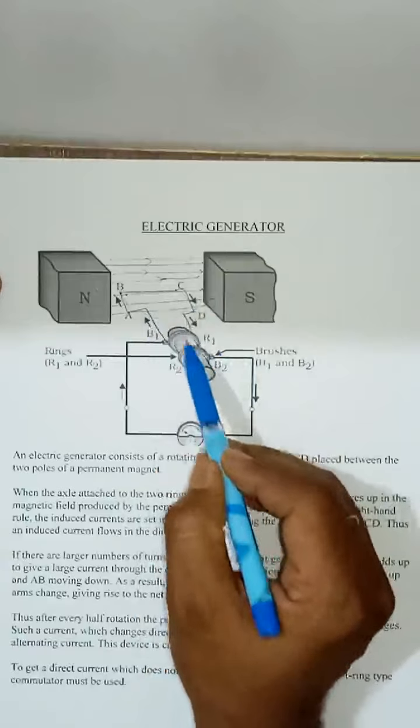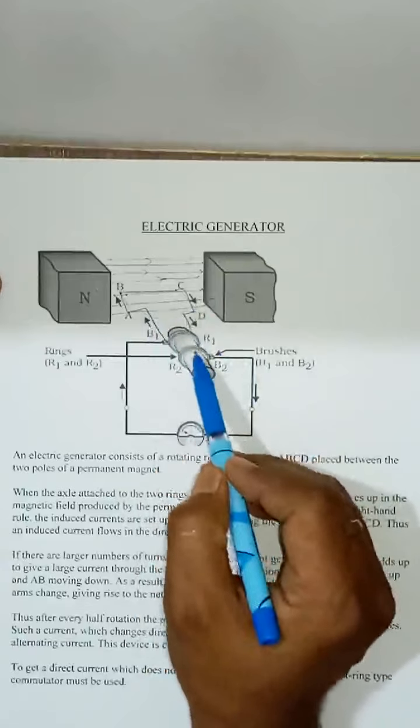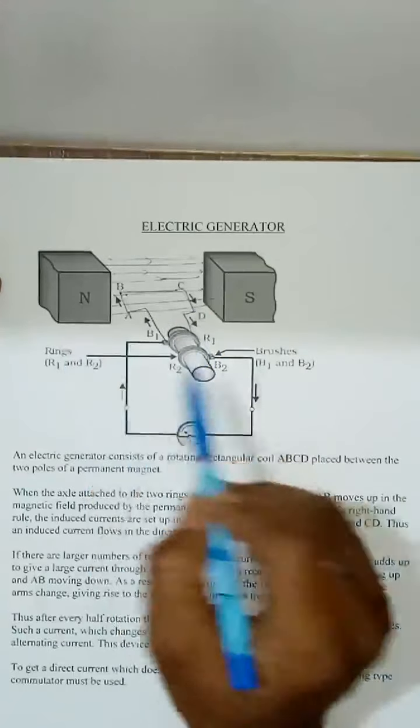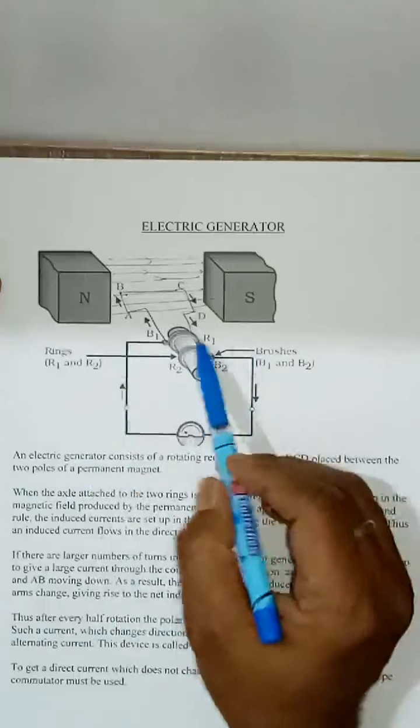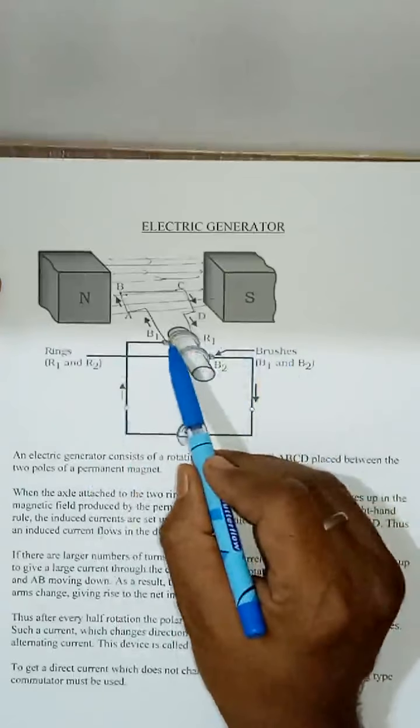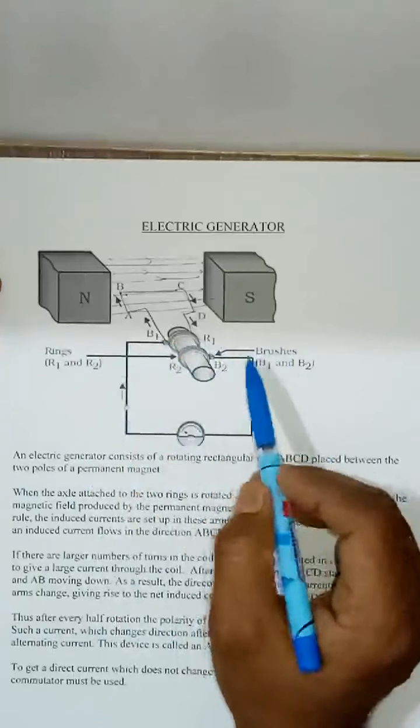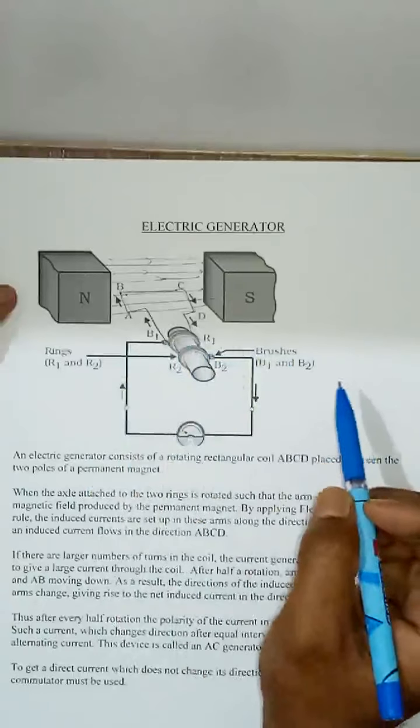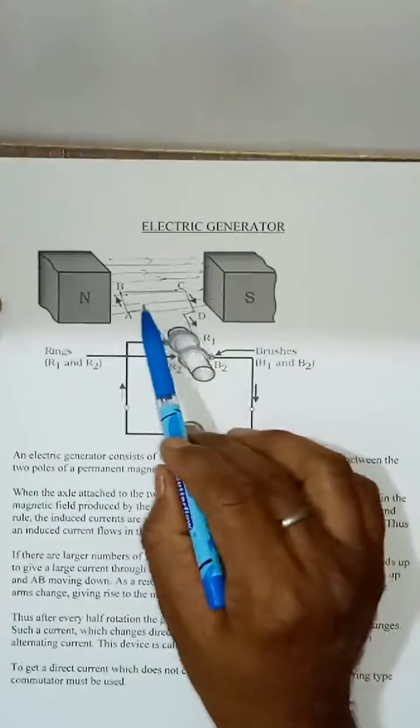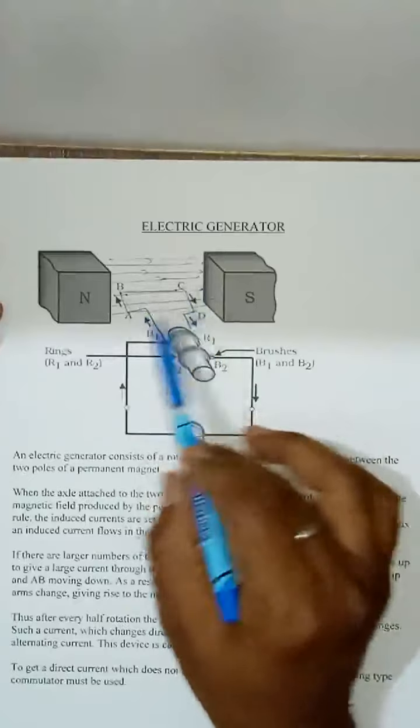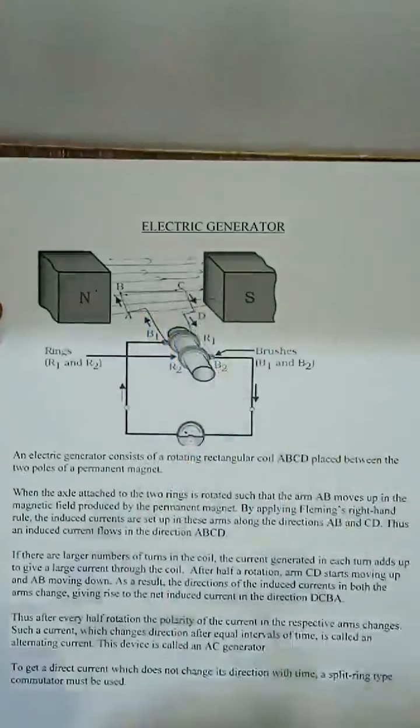Ring 1 and ring 2, and it is attached to brushes here, brush 1 and brush 2. Mechanically this coil is rotated. When it rotates, due to electromagnetic induction, the induced current is produced within this coil.